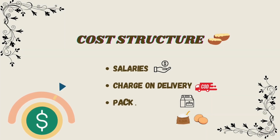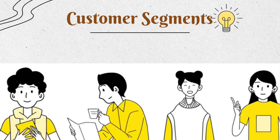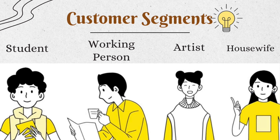For our cost structure, we focus on worker salaries, delivery charges, packaging costs, and raw materials such as flour, eggs, sugar, and so on.